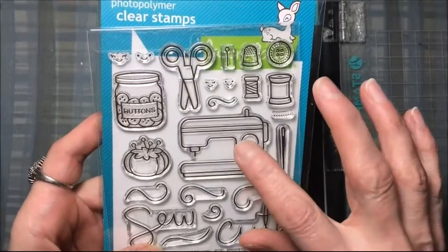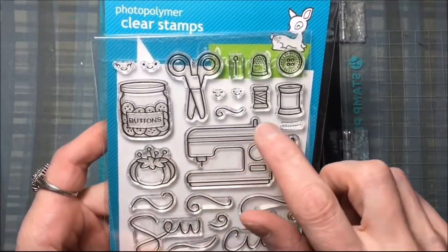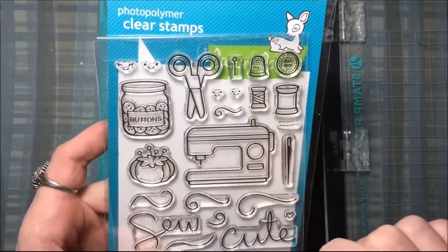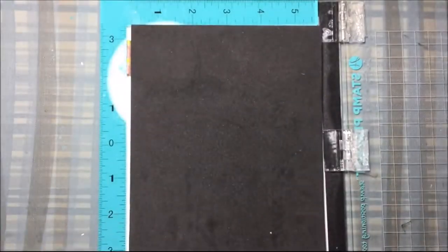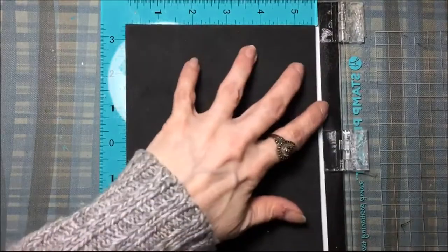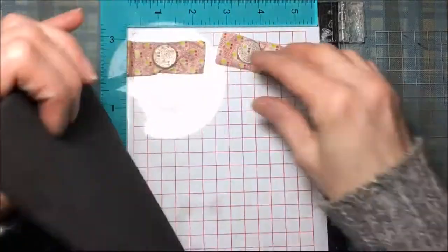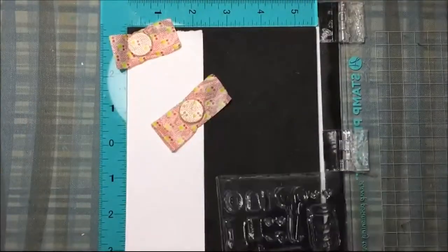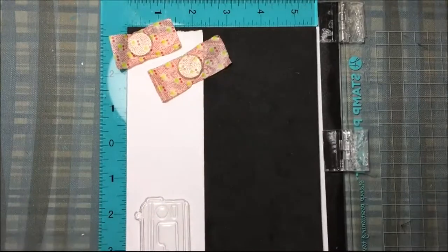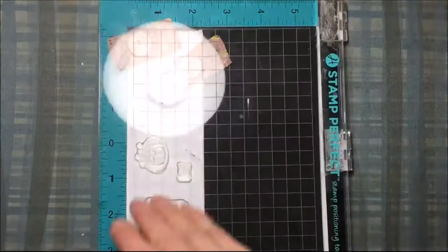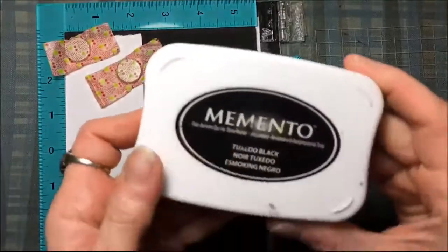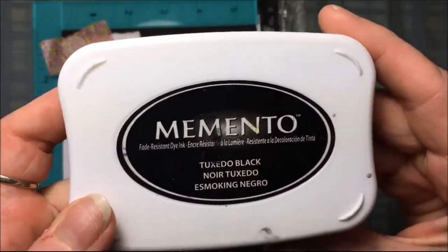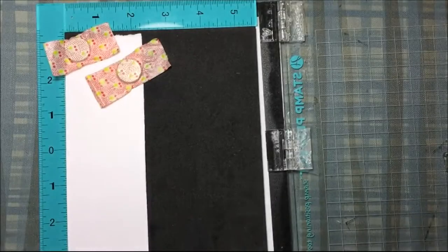So I'm using this Lawn Fawn stamp set called Sewin' With Love, and I'll just be using the sewing machine, the thread, and the pin cushion. I'm using my stamping tool with Georgia Pacific cardstock, putting the elements I want to use in my stamping tool, and I'll be stamping those out with Memento Tuxedo black ink.